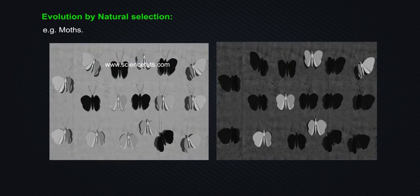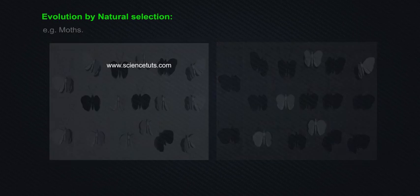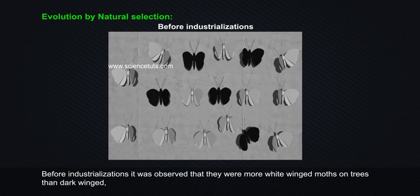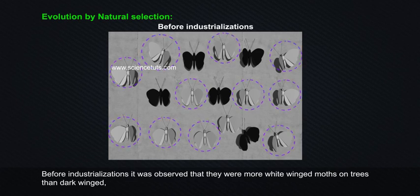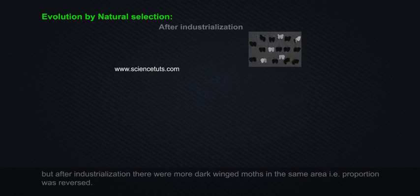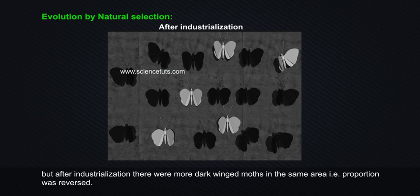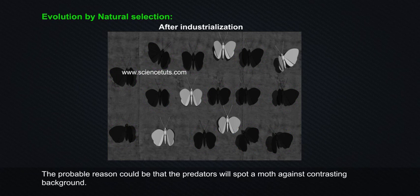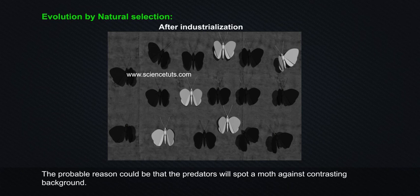Evolution by natural selection. Before industrialization, it was observed that there were more white-winged moths on trees than dark-winged. But after industrialization, there were more dark-winged moths in the same area — the proportion was reversed.